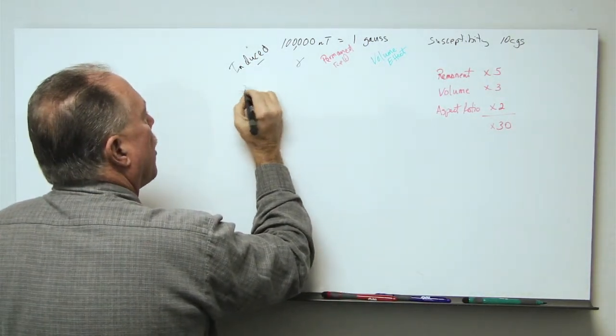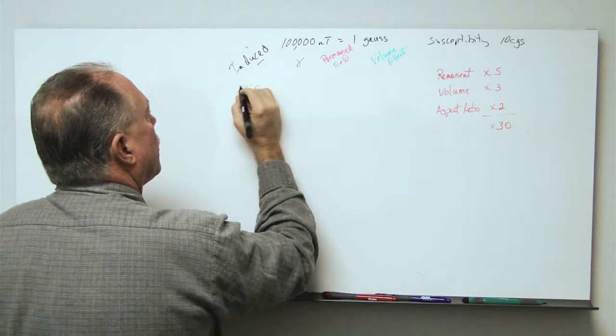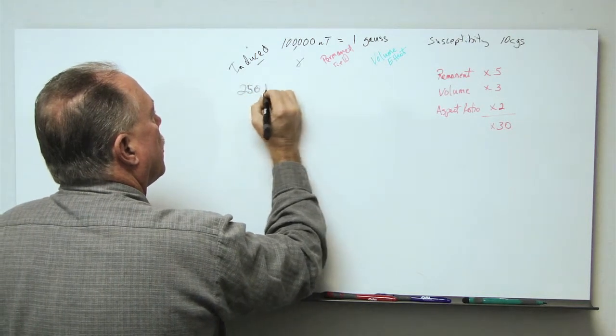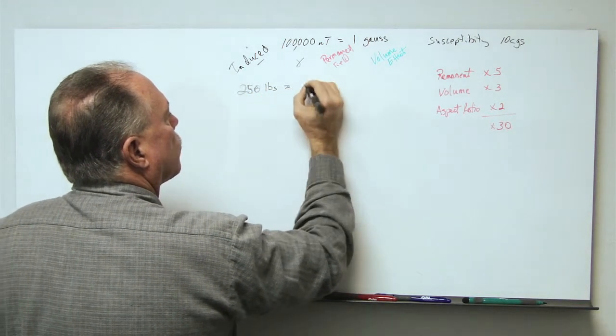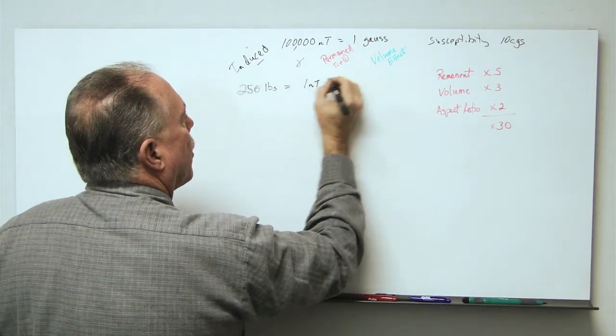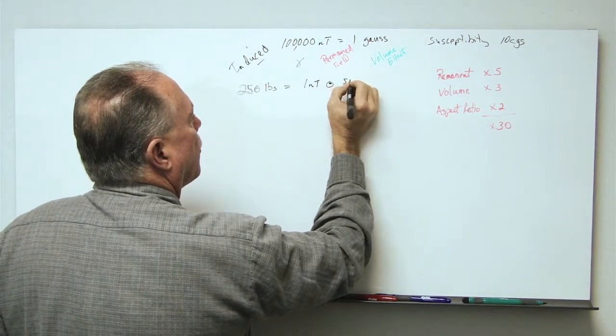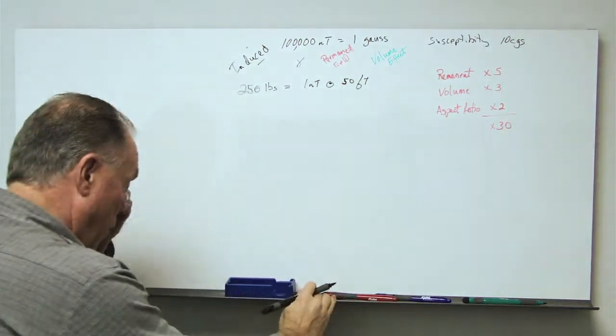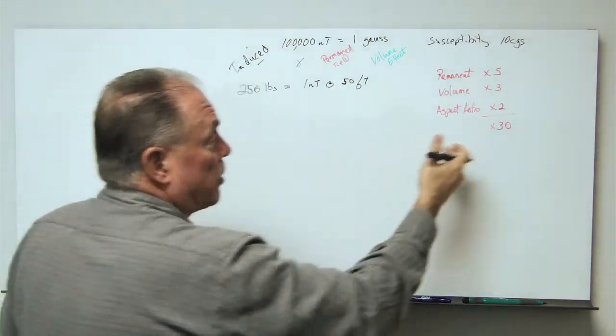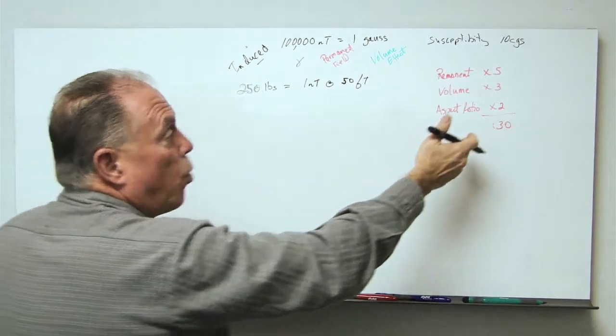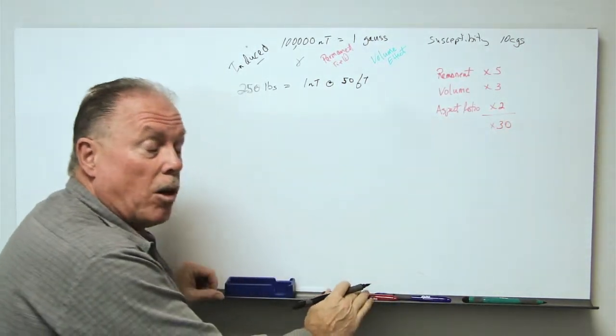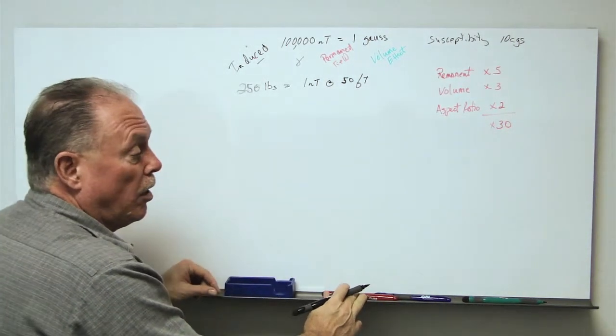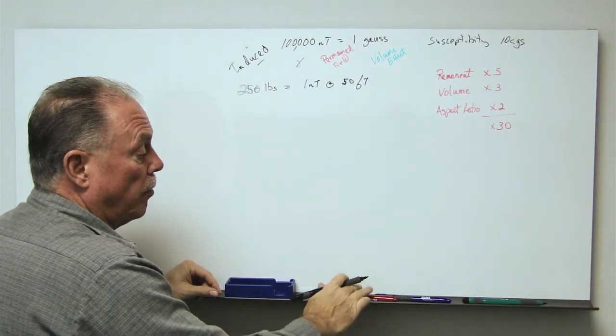So 250 pounds equals 1 nanotesla at 50 feet. Now what we want to remember as we're doing this is that we might actually be able to see quite a bit larger signal from this anomaly that we're working with.